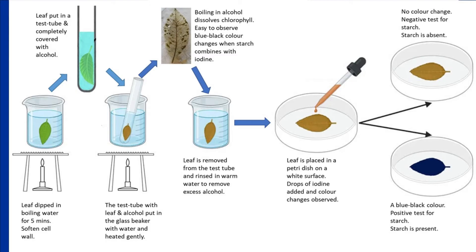After briefly boiling the leaf, the softened leaf is then put in a test tube with alcohol — which can be ethanol or methylated spirits. The alcohol must completely cover the leaf. The test tube with the alcohol and boiled leaf are then put in a glass beaker with water and heated gently. Alcohol is highly flammable, and for safety reasons alcohol should never be placed directly over an open flame. Boiling in alcohol removes chlorophyll and other pigments from the leaves.